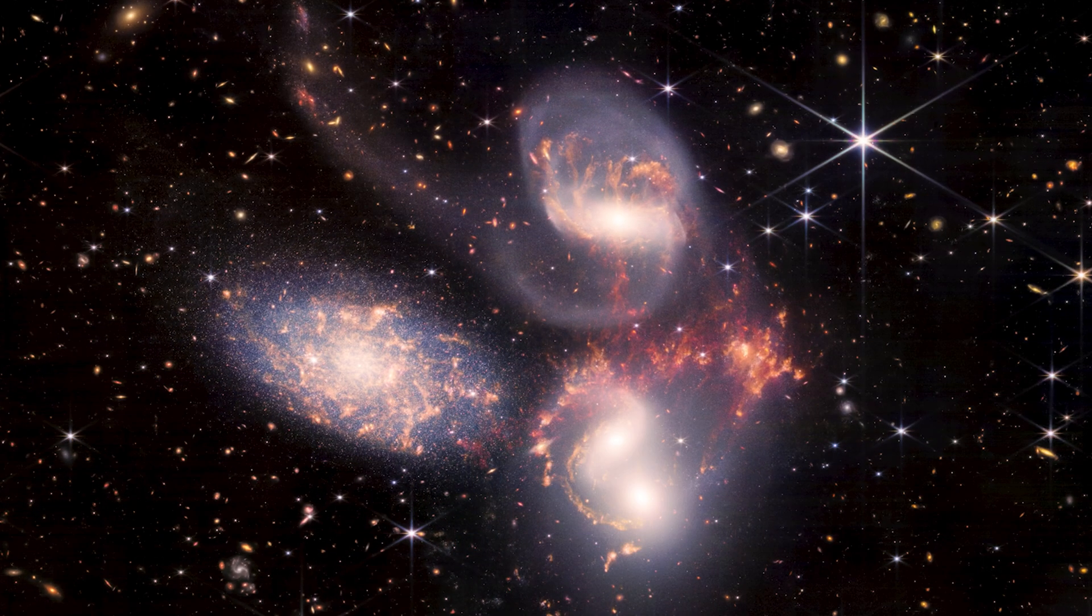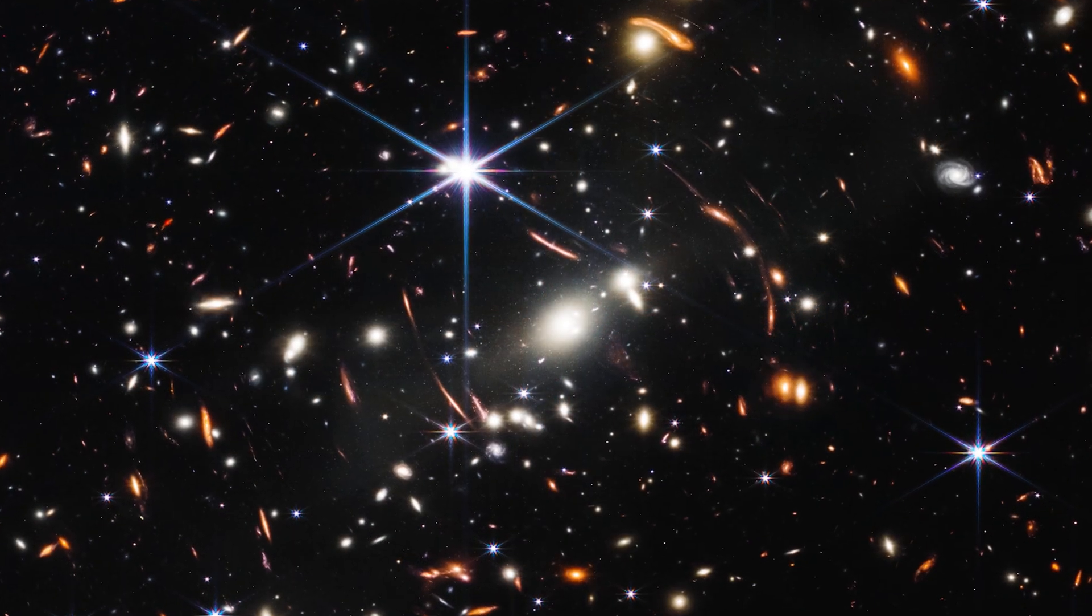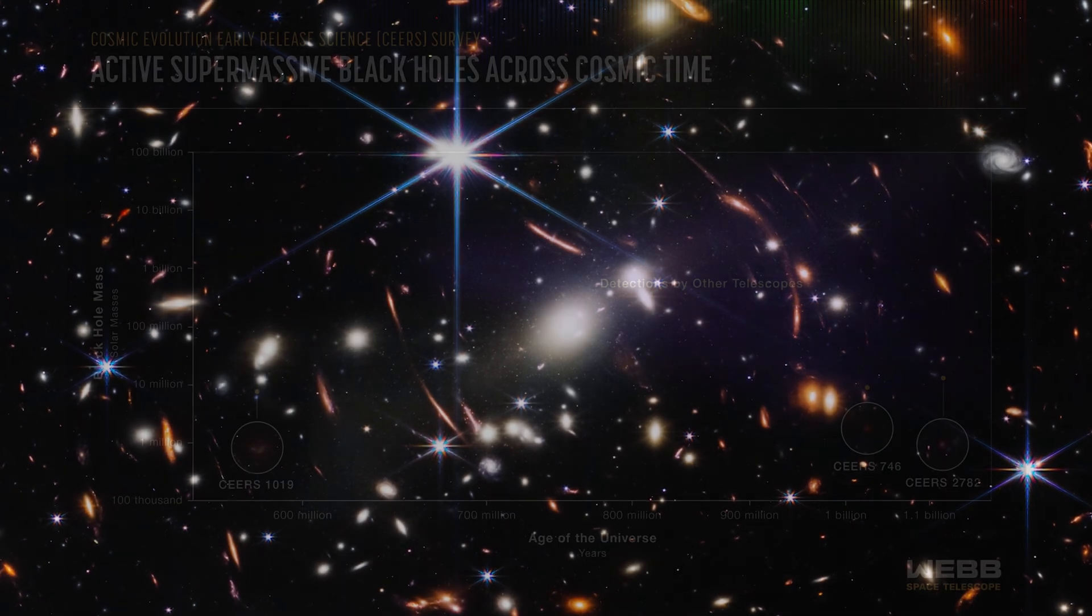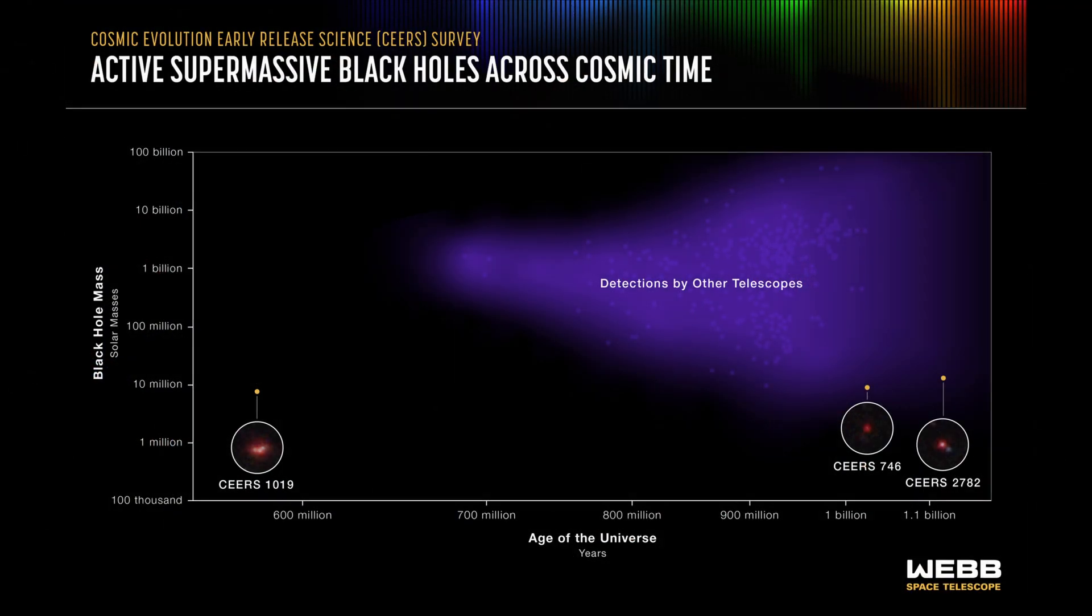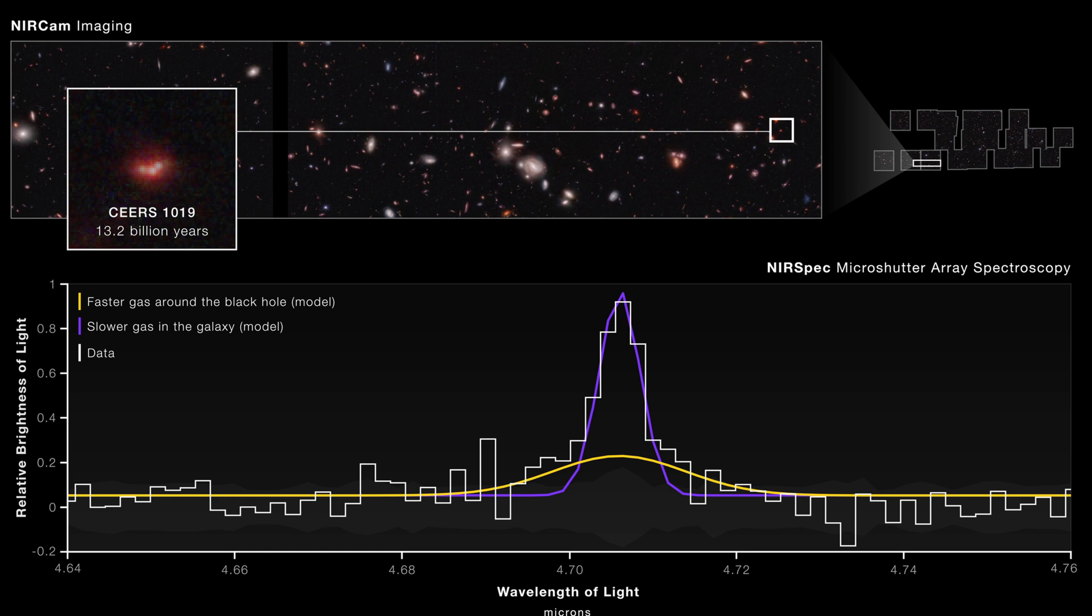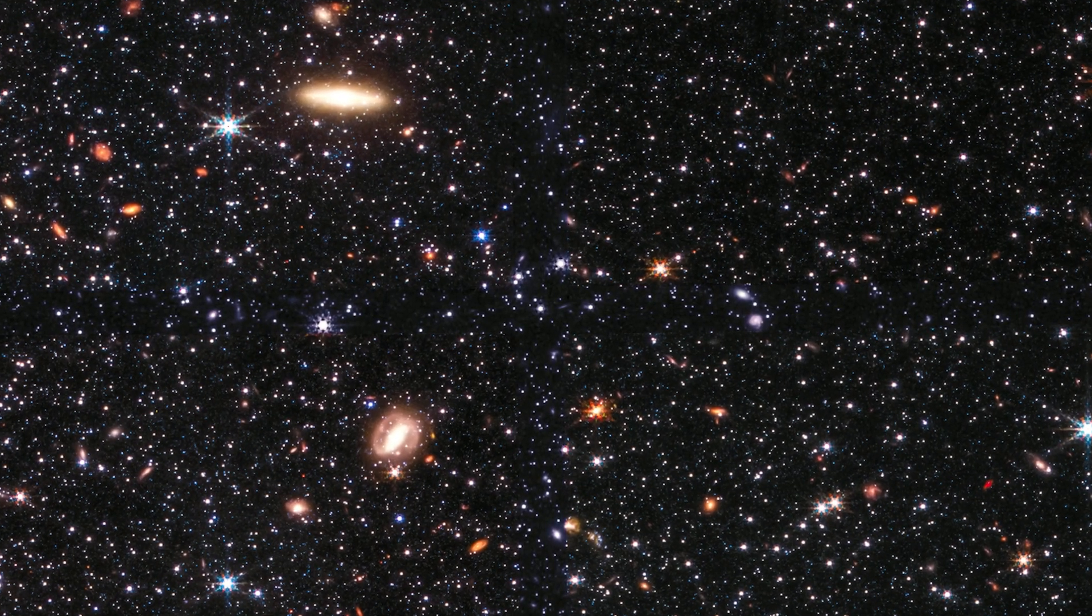Since launch, Webb has already made headline discoveries. It has detected galaxies and black holes at record distances, probing only a few hundred million years after the Big Bang. For example, Webb found the most distant active supermassive black hole yet in the galaxy CEERS 1019, just 750 million years after the Big Bang, and identified a population of very early galaxies.